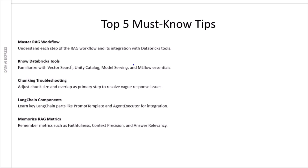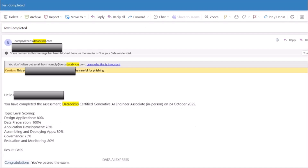To summarize, my top five must-know tips are: First, master the RAG workflow and how to integrate it in Databricks. Second, know the purpose of Vector Search, Unity Catalog, Model Serving, and MLflow. Third, know how to troubleshoot chunking problems — this will be on the exam. Fourth, understand basic LangChain concepts like prompt templates and agent executors. Fifth, memorize the RAG evaluation metrics and methods like faithfulness, precision, and relevancy.